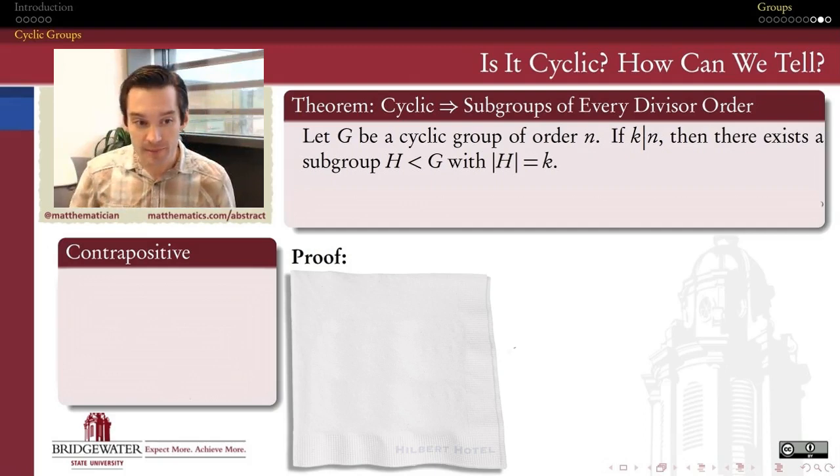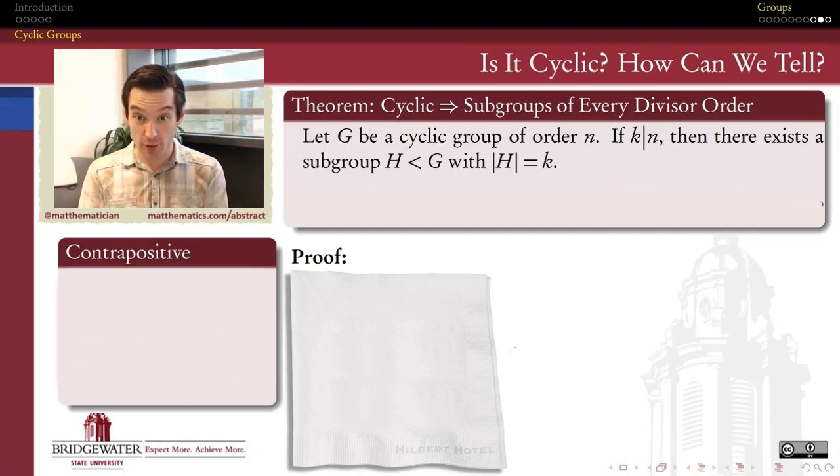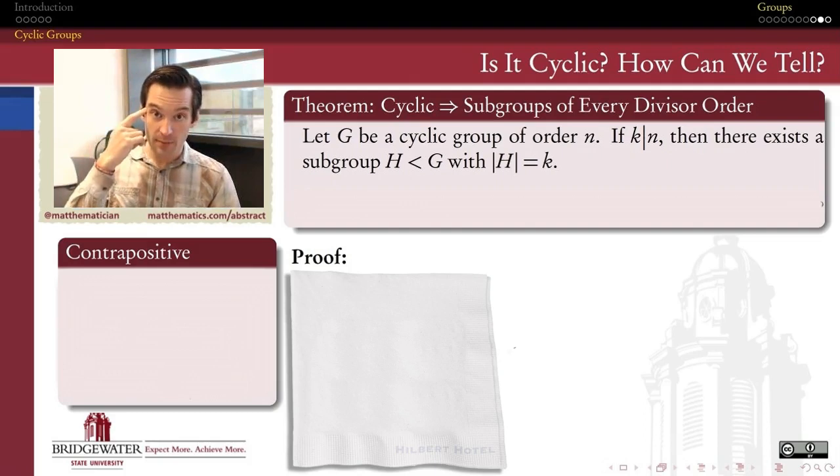So, how shall we prove this? We have here a cyclic group, by assumption, and it's a finite cyclic group. n here, by assumption, is a finite integer. So, what do I do in my mental cartoon bubble for a finite cyclic group? I think about a clock.